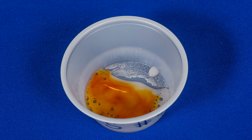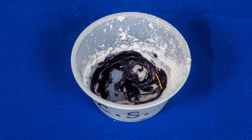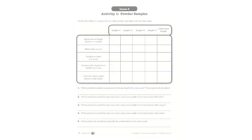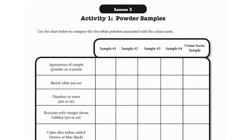Do bubbles form in any of the samples? Finally, instructors should add two drops of iodine to each sample in its cup. Does the brown color of the iodine remain, or does it change to blue-black? A color change to blue-black is a positive result for the presence of starch. Students will finish this activity by recording their data and answering questions found on the Activity 1 Powder Samples page.